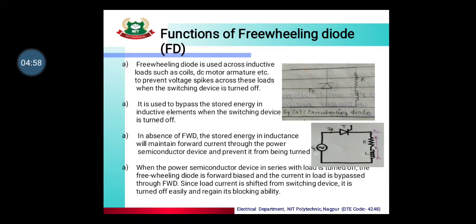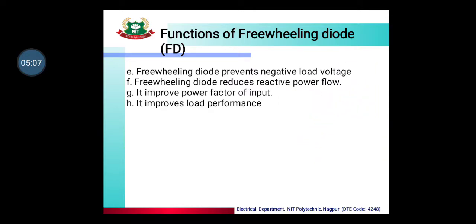Without the freewheeling diode, the negative supply voltage appears across the load. The freewheeling diode prevents this negative load voltage from appearing.